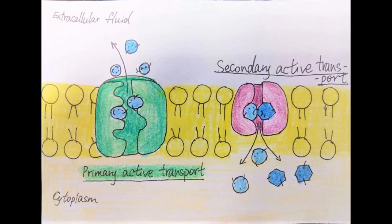Molecular active transport: Primary active transport uses energy in the form of ATP to transport molecules across a membrane against their concentration gradient.